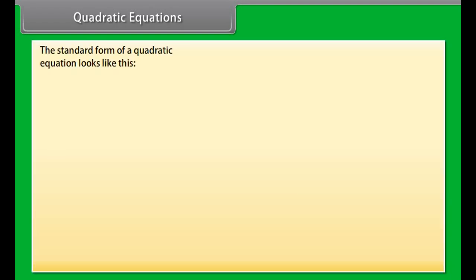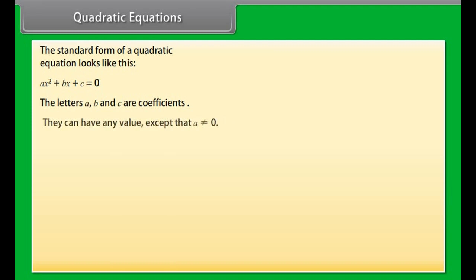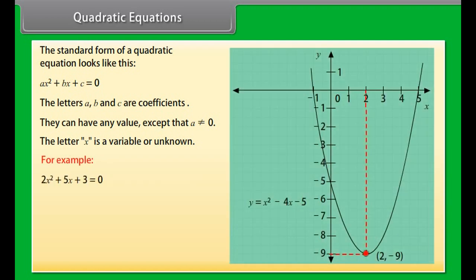What are the quadratic equations? The standard form of a quadratic equation looks like this: AX squared plus BX plus C is equal to 0. The letters A, B and C are coefficients. They can have any value, except that A can't be 0. The letter X is a variable or unknown.